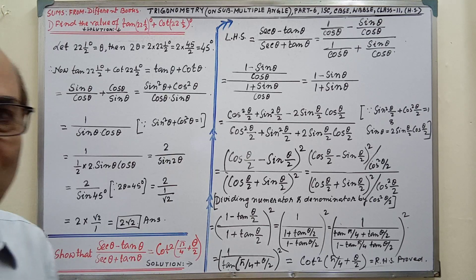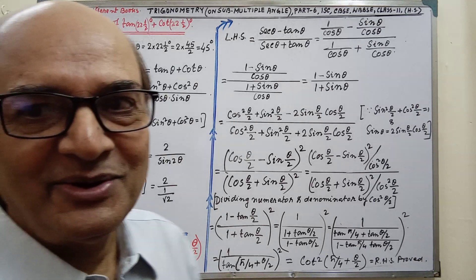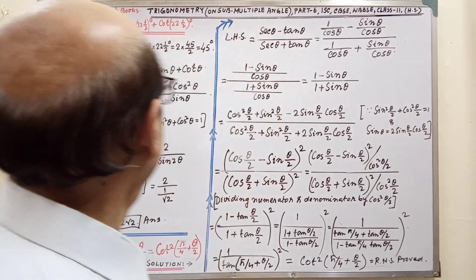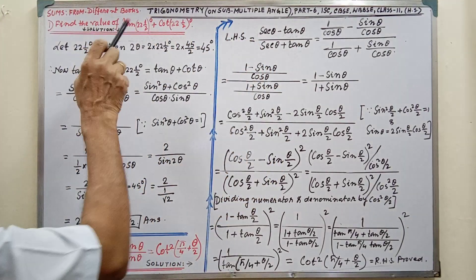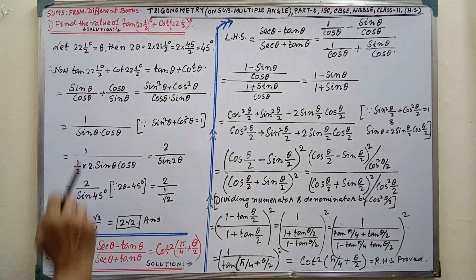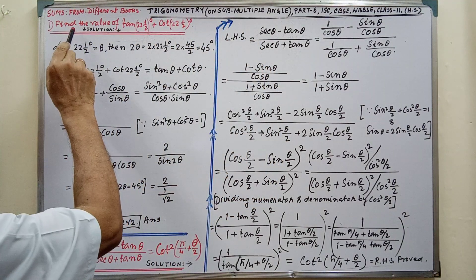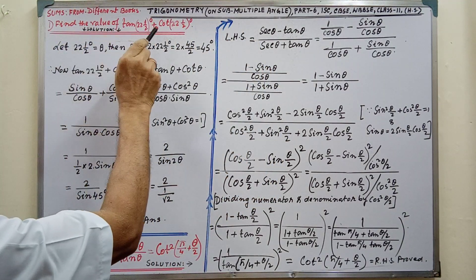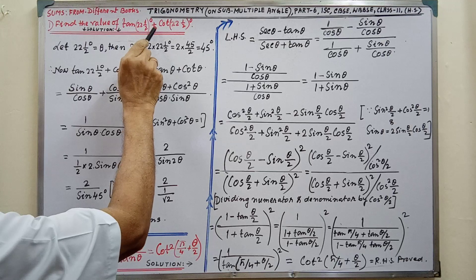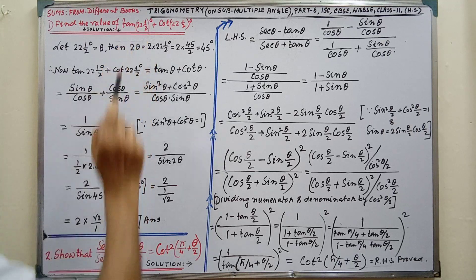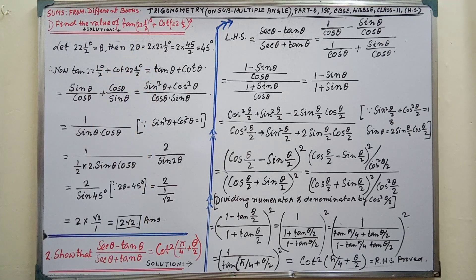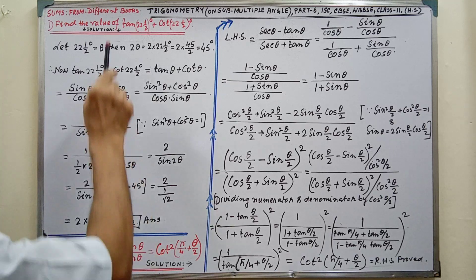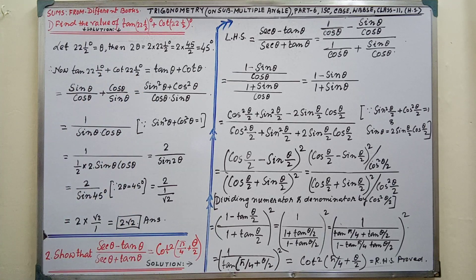Now please pay your attention on the board. Sums given from different books — the statement of the sum is written here: tan 22 and half degree plus cot 22 and half degree. We have to find out the value.